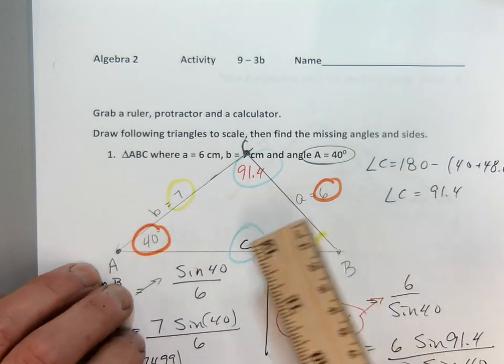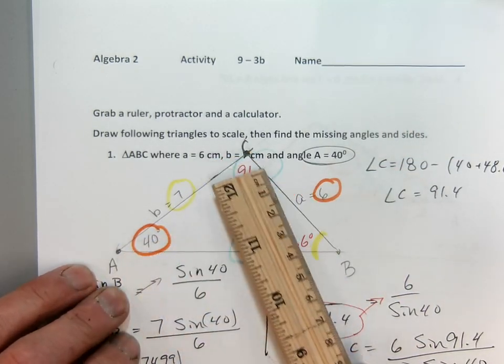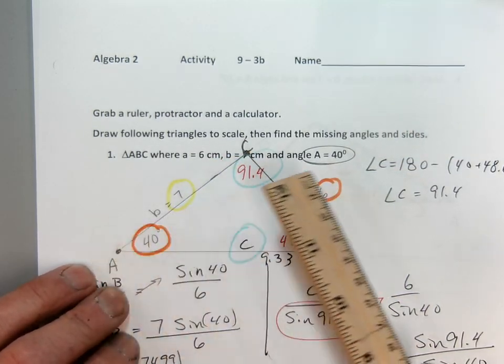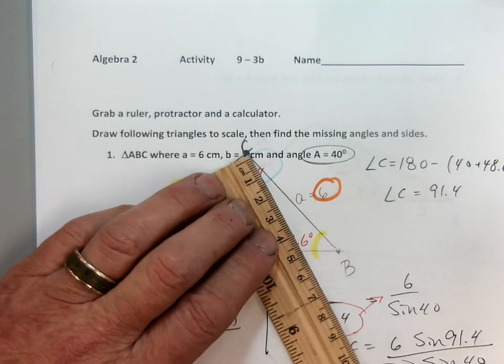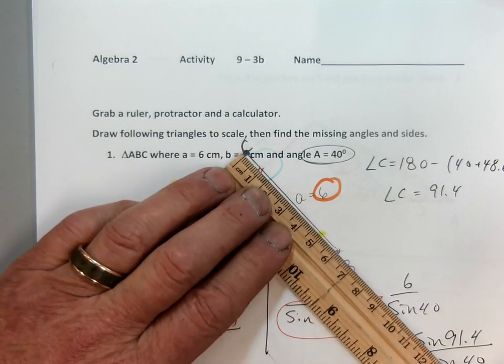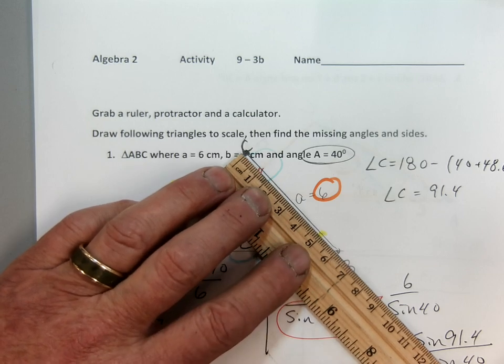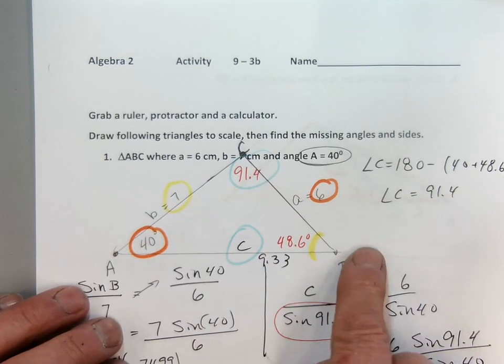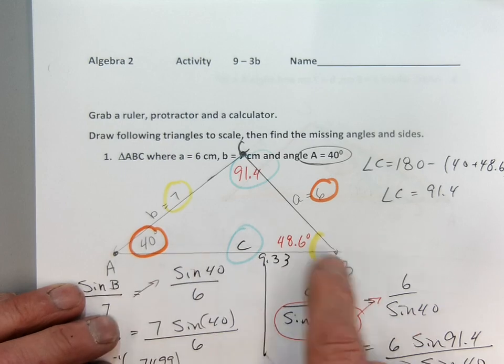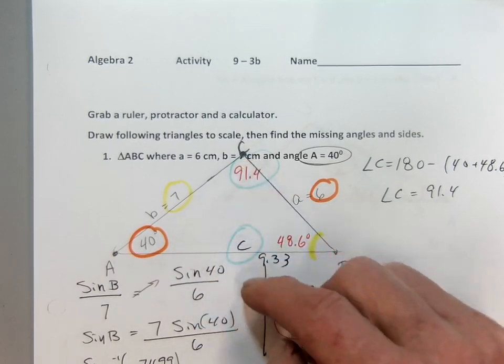Now angle A is 40, so side A has to be on the other side, opposite side. So I used my ruler and I found out exactly where it touched, six, and then I erased all the extras. So here's my triangle, A, B, and of course I know that's C right there, angle C, because triangle ABC.